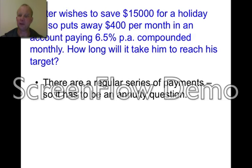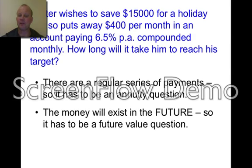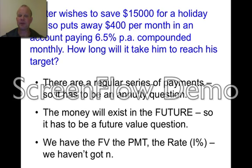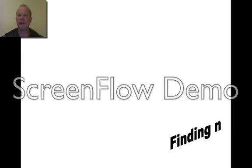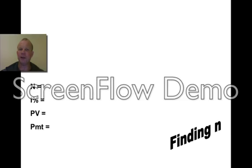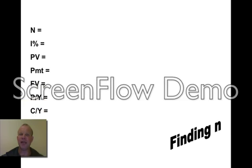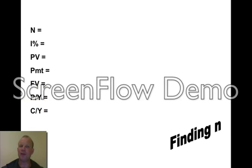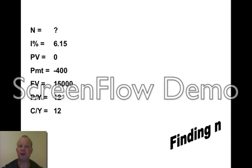There is a regular series of payments. The money exists in the future. We have FV, payment, and the rate, but we haven't got N. So, on paper, write down N, I, PV, payment, future value, payments per year, and compounding periods per year. Fill in what you know.